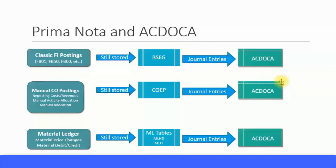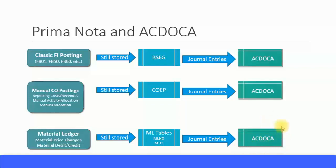Remember, all entries will always be posted to the ACDOCA table. Next, material ledger postings — for example, material price changes or material postings with debit or credit changes. These are still stored in the material ledger tables, which are MLHD and MLIT and so on. However, the journal entries are actually posted in the ACDOCA table. Because the ACDOCA table has all FI postings, CO postings, material ledger postings, asset accounting postings, and COPA account-based profitability analysis postings as well. Everything is entered in the ACDOCA table.